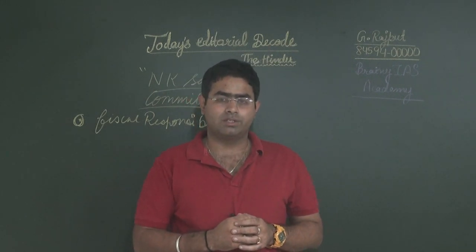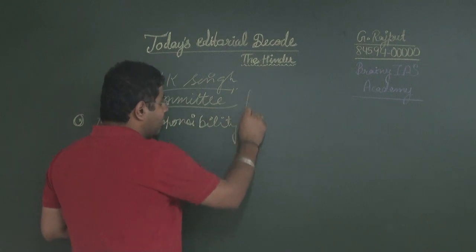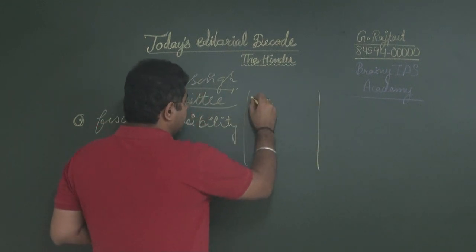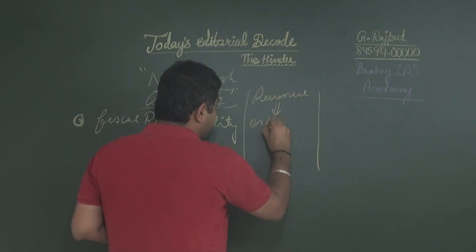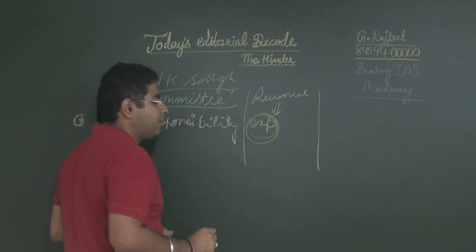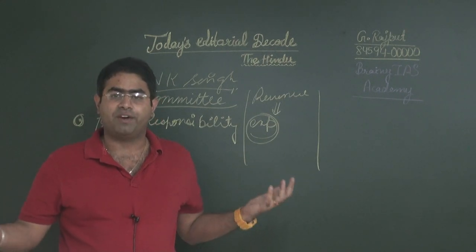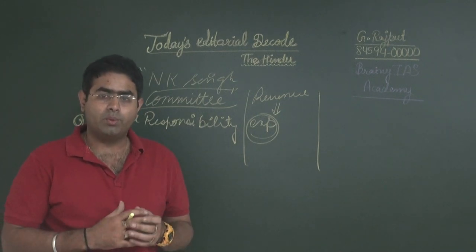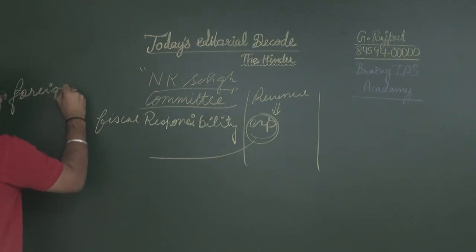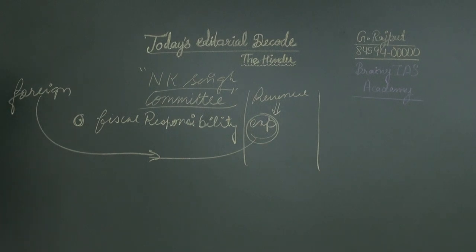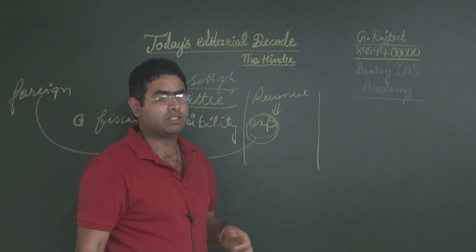However, the capacity and capability of the government to spend more is always constrained by its revenues. Every government must keep in consideration what its revenue is, and decide expenditure only on that basis. If governments do more expenditure than their revenues, they become economically and financially weak, and foreign investors will not invest in our country.